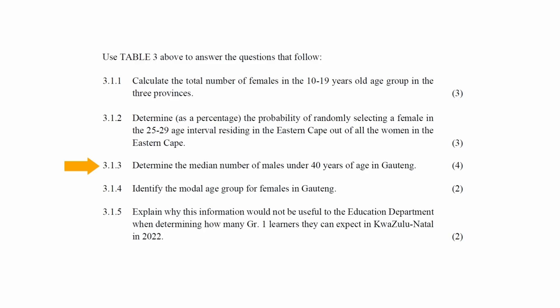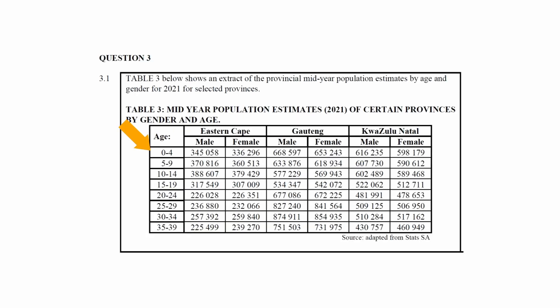In question 3.1.3, you are instructed to determine the median number of males under 40 years of age. From the table, the age range for the study ranges from 0 to 39 years, so all people in the survey are under 40. The median is the number that divides the data set into two equal groups — in other words, the number in the middle of the data set.